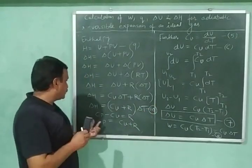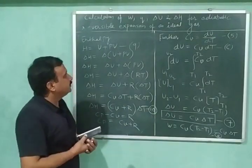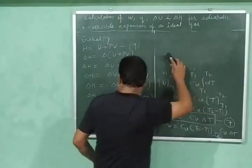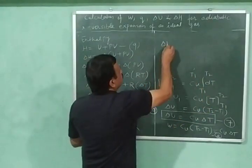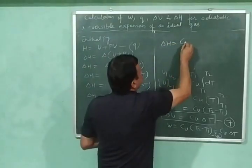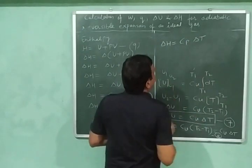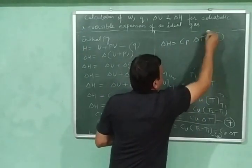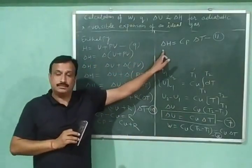Substituting Cv plus R equal to Cp into the expression, we get delta H equals Cp times delta T. This is the required expression for the change in enthalpy.